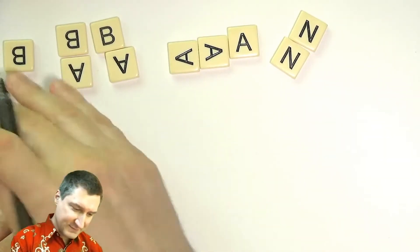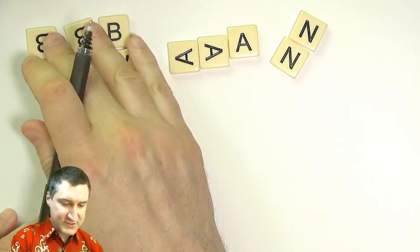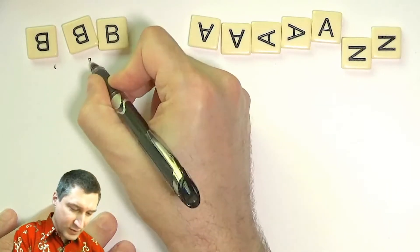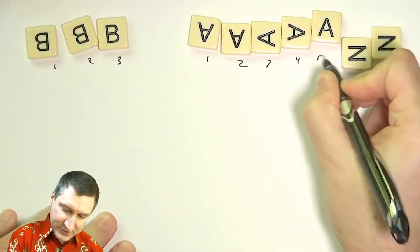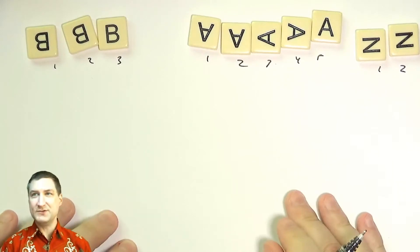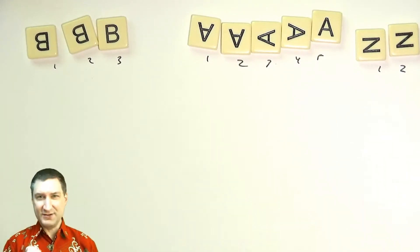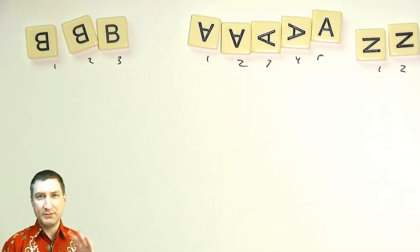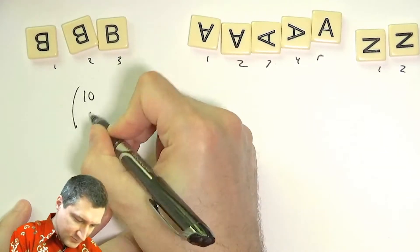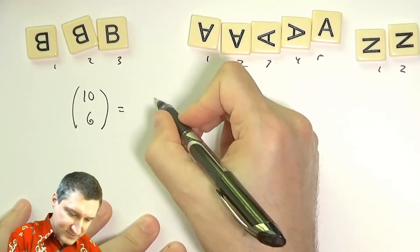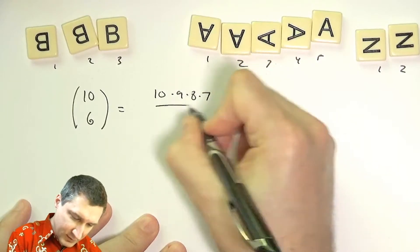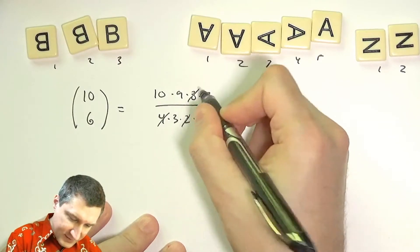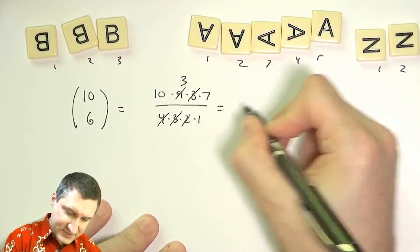For this we need a slightly different computation. Imagine the tiles are numbered — B1, B2, B3, A1 through A5, N1 and N2. Now I'm choosing six of these ten tiles. The number of possible draws is 10 choose 6, which is (10×9×8×7)/(4×3×2×1). After cancellation, that gives 210 possible collections.